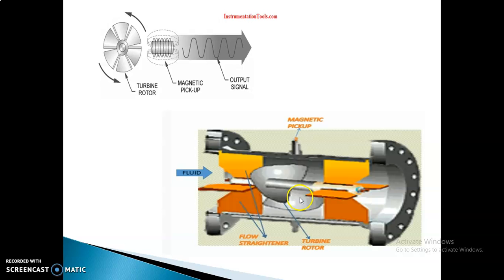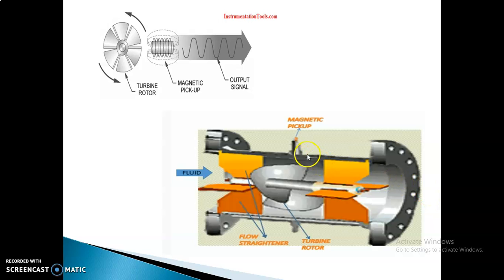The flow straightener consists of blades and a turbine rotor. When the fluid enters the flow straightener, the rotor will rotate. The blades are made up of magnets, and there are generally four to eight blades. The upstream and downstream paths are defined, and above the rotor there is a magnetic pickup coil. Once the rotor rotates, there will be an induction of the AC signal, which is picked up through the magnetic pickup.